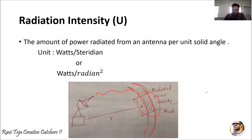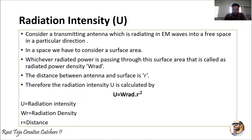Whatever power passes through that surface can be considered as the radiated power density. If the signal is propagating, there is power dissipating through that particular surface area. How much power dissipates in the selected area is what we call radiated power density, denoted W_rad, where 'rad' refers to radiation and is measured in watts.